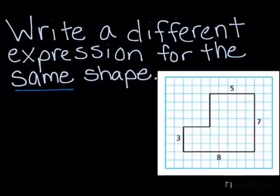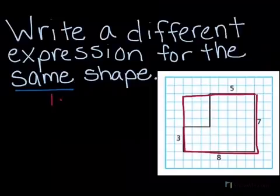So one way to do that is to look at our complex shape and make it bigger. So I'm going to extend it so it's one big rectangle. Same as before, to find my area, it's just length times width. So in this case, my length is 8 times my width, which is 7.